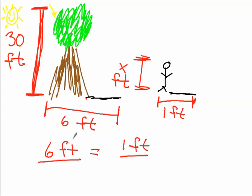And so both the shadows are on top, the six foot tree shadow and the one foot dude shadow. And then the tree is actually 30 feet tall. So we'll put that over 30. But we don't know how tall the dude is, and that's what we're trying to find out. So we'll put that in as x.